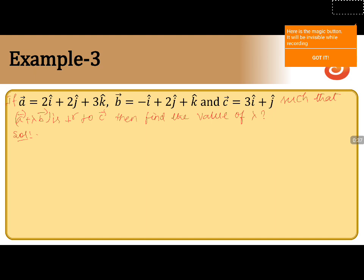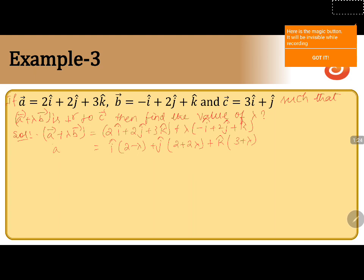First we will calculate vector a plus lambda times vector b. So vector a plus lambda vector b equals 2i plus 2j plus 3k plus lambda into minus i plus 2j plus k. Taking i, j, and k as common, we get (2 minus lambda)i plus (2 plus 2 lambda)j plus (3 plus lambda)k. This is the value of vector a plus lambda times vector b.